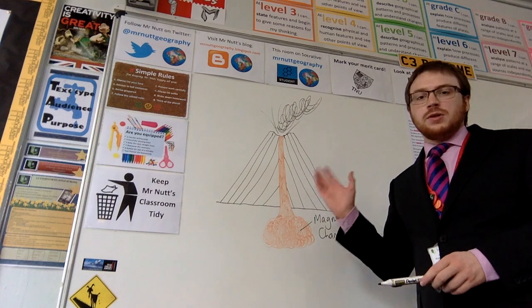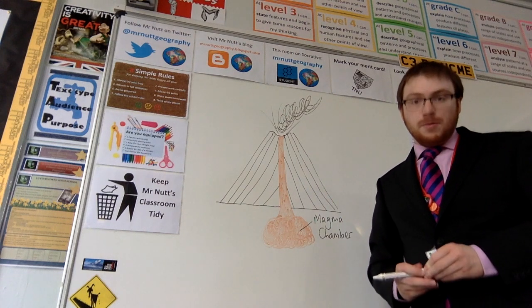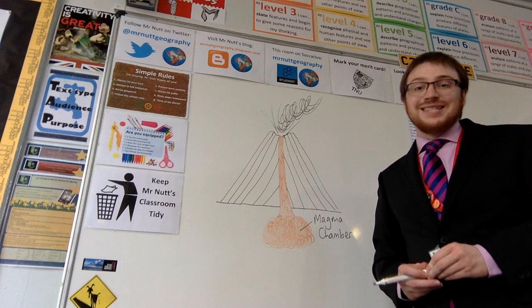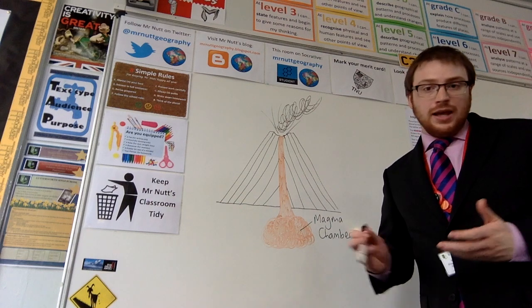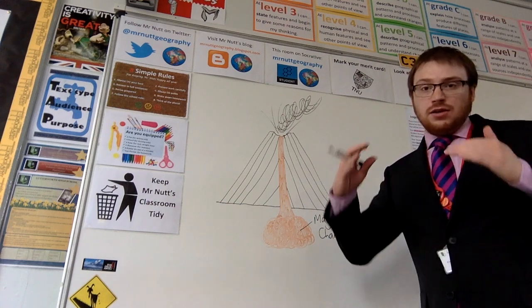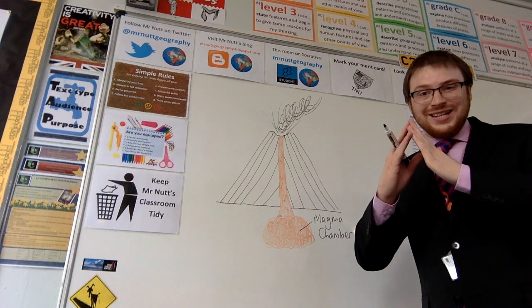So here's my diagram of a composite volcano. Composite volcanoes occur at destructive plate boundaries where two plates are coming together, either in subduction or in a collision boundary.